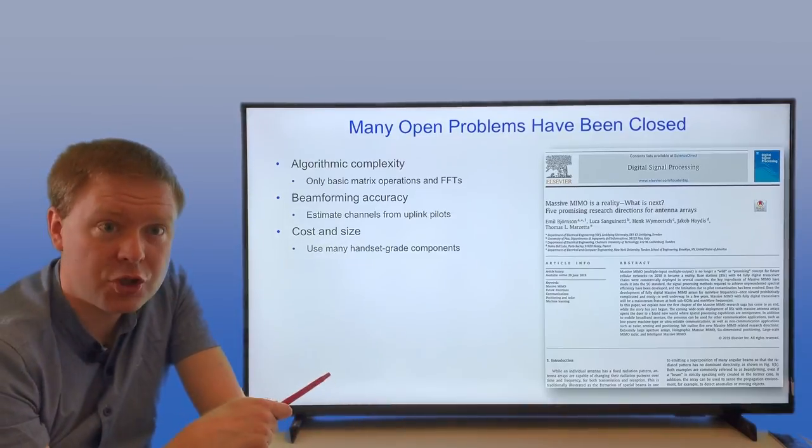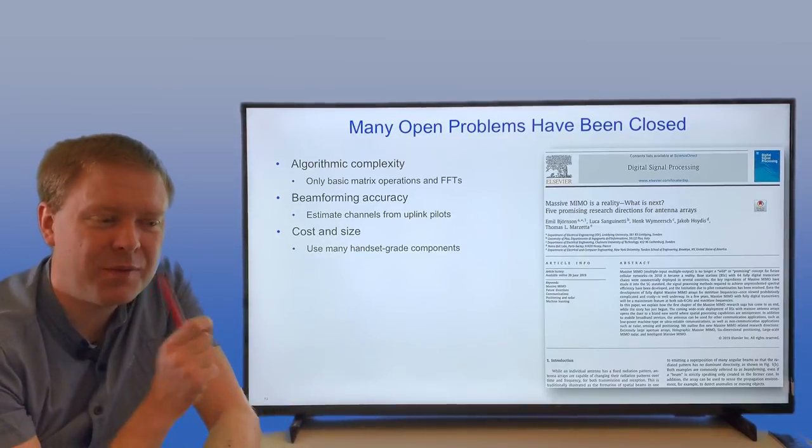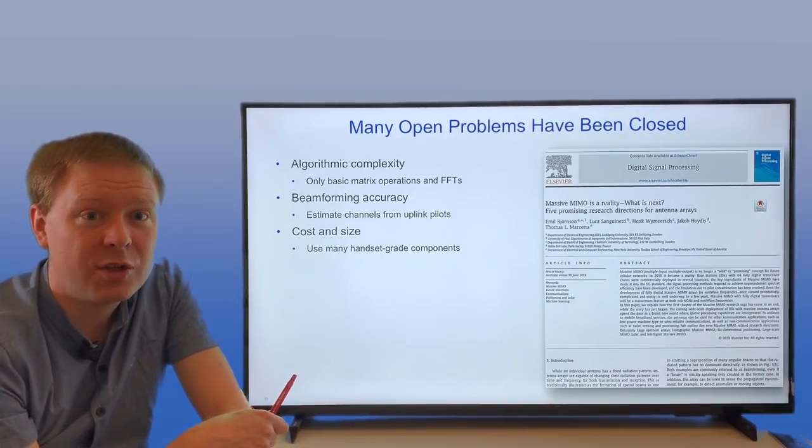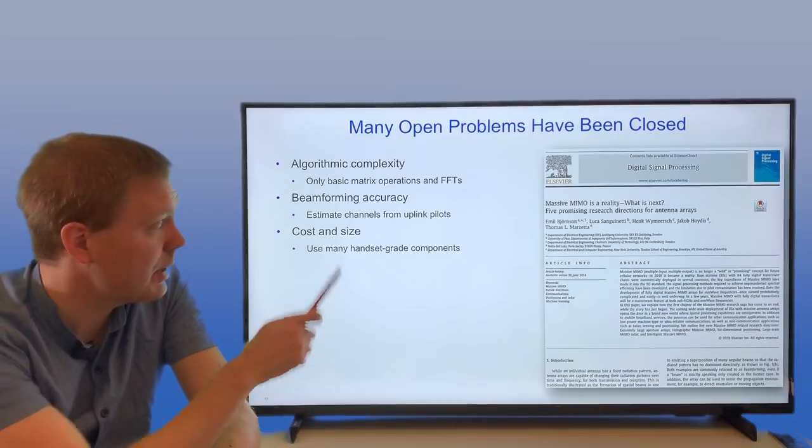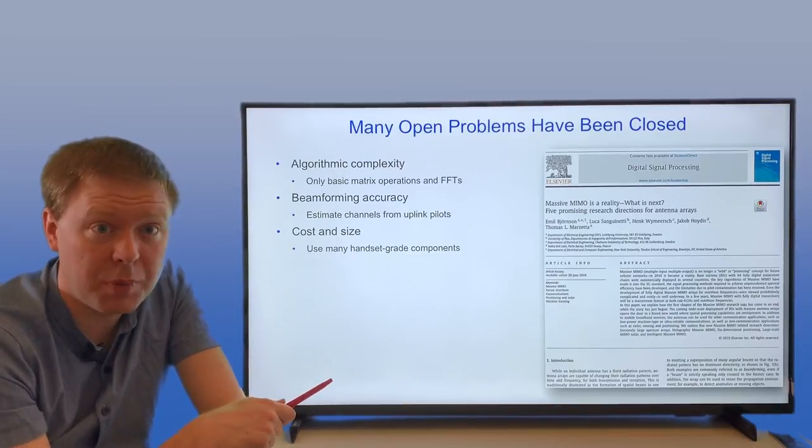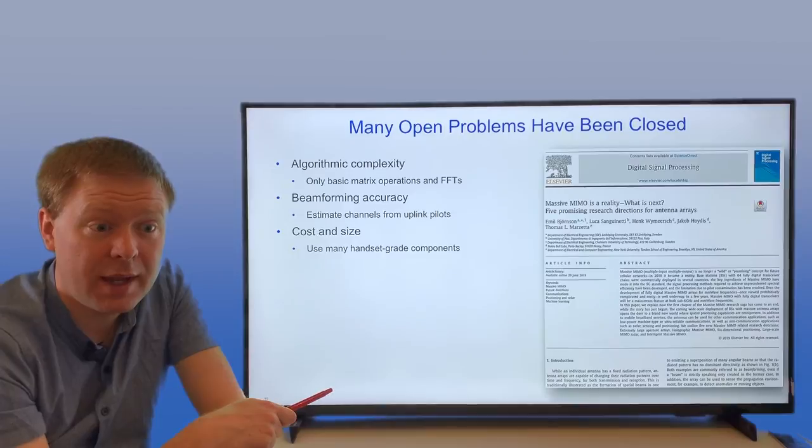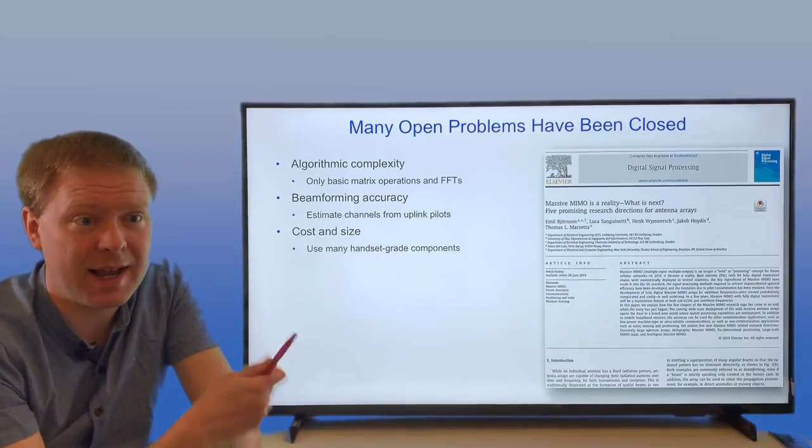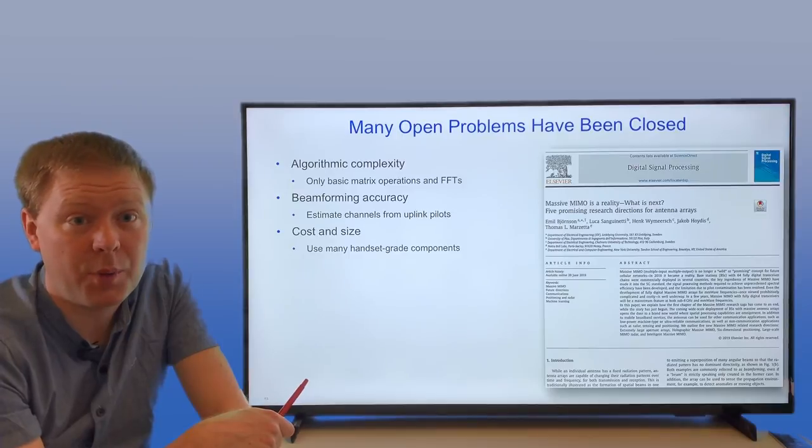What we also have shown in theory is that we don't need every antenna in the Massive array to use the traditional high-grade hardware components. We can go down to handset-grade components instead. That's because every antenna will transmit with much less power. We don't need as capable power amplifiers anymore.